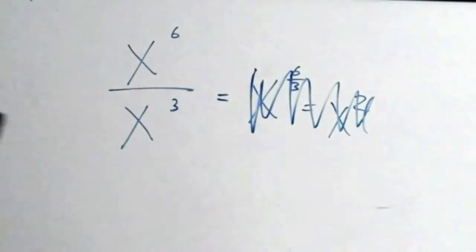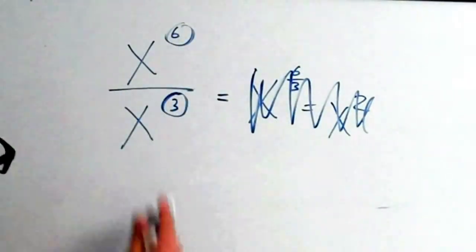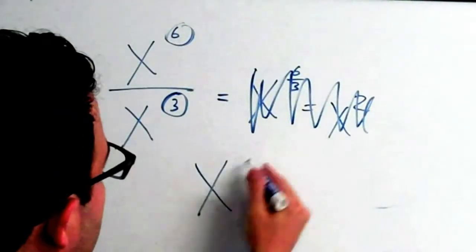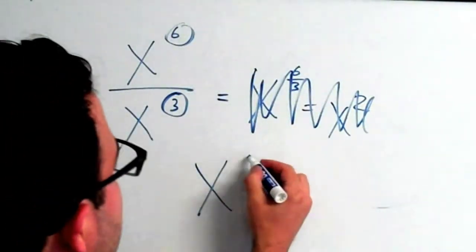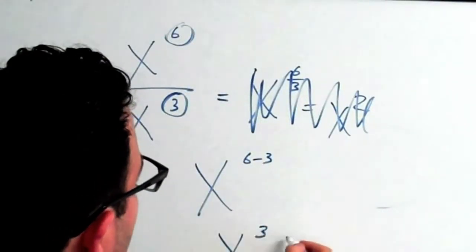What you want to do when you divide exponents is subtract the exponents from one another. So x to the 6th divided by x cubed is the same thing as x to the 6 minus 3, which is x to the 3rd.